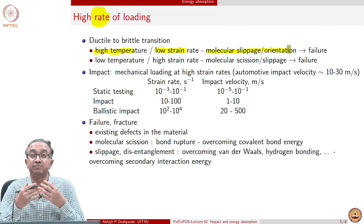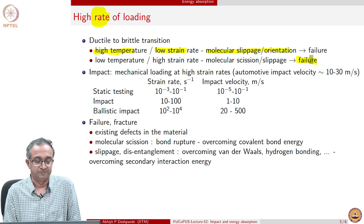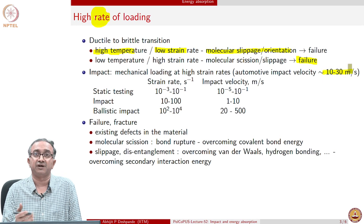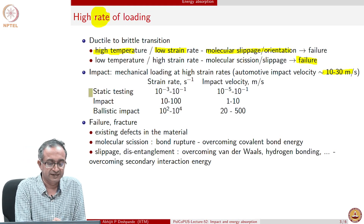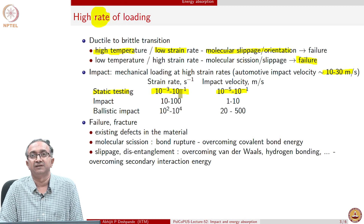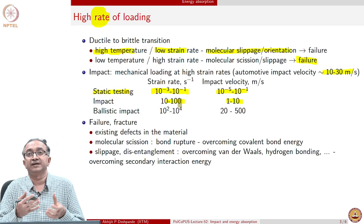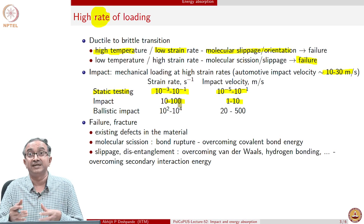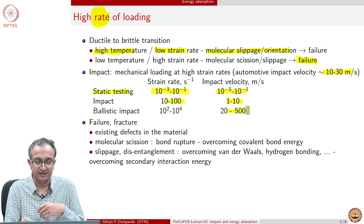But at low temperature or very high strain rates, slippage and orientation processes cannot take place because the rate of loading is very high. Consequently, molecular breakage and some associations — phenomena which have to happen for failure — occur. To give you an idea of different rates: bus, truck, car, or two-wheeler velocities are 10 to 30 meters per second. Static testing is done at strain rates of 10 to the power minus 1 and lower. Impact testing is at much higher loads. For ballistic impact — bomb explosions, bullets — the rates are even higher.